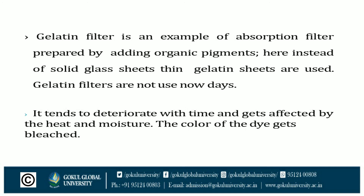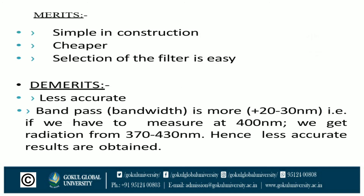Gelatin filters are not used nowadays. The merits of this type of filter are simple construction and cheaper, easier selection. The demerit is less accuracy because the band pass is wide — plus or minus 20 to 30 nanometers. For example, measuring at 400 nanometers gives radiation from 370 to 430 nanometers, resulting in less accurate results.